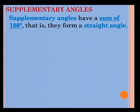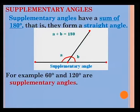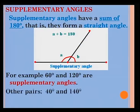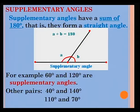Supplementary angles have a sum of 180 degrees — that is, they form a straight angle. For example, 60 degrees and 120 degrees are supplementary angles. Other pairs can be 40 degrees and 140 degrees, 110 degrees and 70 degrees. In both cases, you will notice that the sum of the two angles gives you 180 degrees. Therefore, they are supplementary angles.